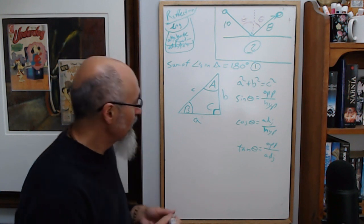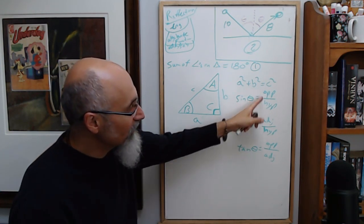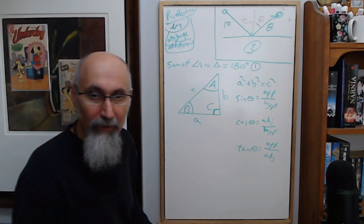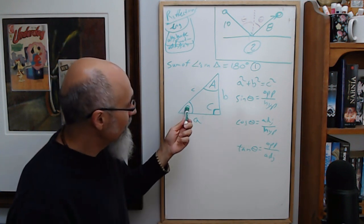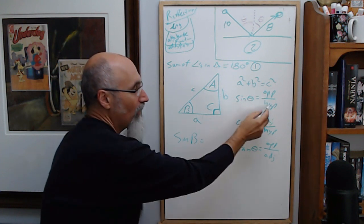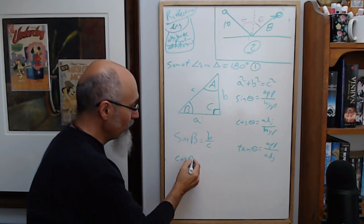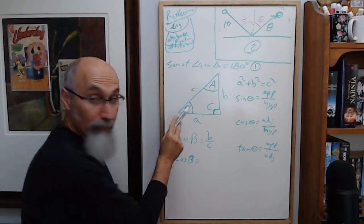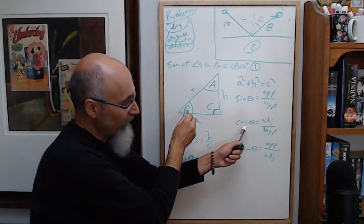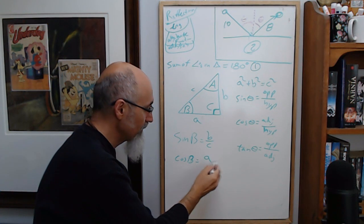Here's the trigonometry aspect of the formulas. Sine theta is opposite over hypotenuse, cosine theta is equal to adjacent over hypotenuse, and tan theta is equal to opposite over adjacent. The theta is the angle where you're at, and relative to that angle, that's what the opposite, hypotenuse, and adjacent are going to be. The hypotenuse is always across from 90 degrees.